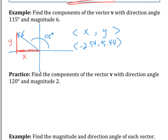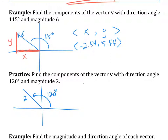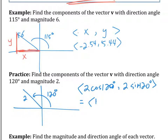Go ahead and practice with the next one. The component form — double check yourself. 120 is here, magnitude is 2. So the component form is 2 cosine 120, 2 sine 120. That turns out to be negative 1, square root 3 — or negative 1, 1.73.